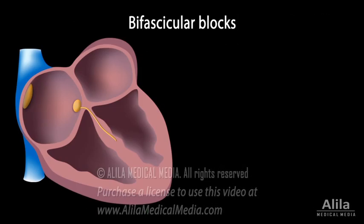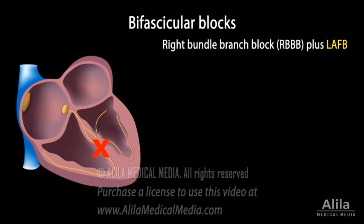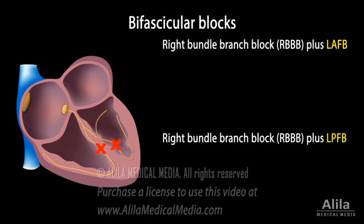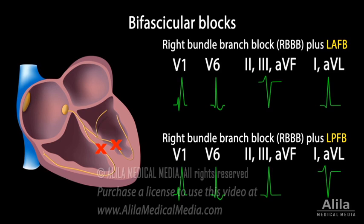Bifascicular block is blockage of any two of the three fascicles — left anterior, left posterior, and right bundle branch. The term is usually used to describe right bundle branch block plus LAFB or LPFB. The ECG patterns reflect both conditions.